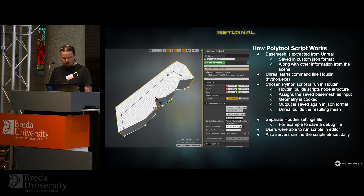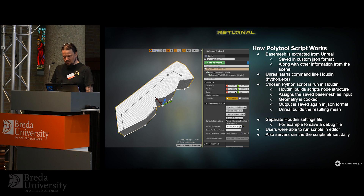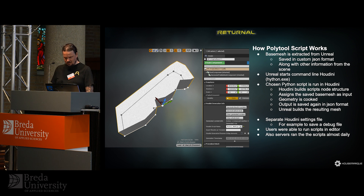Let's go through the order of how our command-line script worked. Once a user or server machine triggers a Houdini generation, the base mesh is extracted from Unreal and saved in our custom JSON format. Unreal starts command-line Houdini. The chosen Python script runs in Houdini and builds the needed node structure. Houdini assigns the JSON file to our import node. The geometry is cooked, the output is saved again in JSON format, and finally Unreal reads the JSON and builds the resulting mesh.